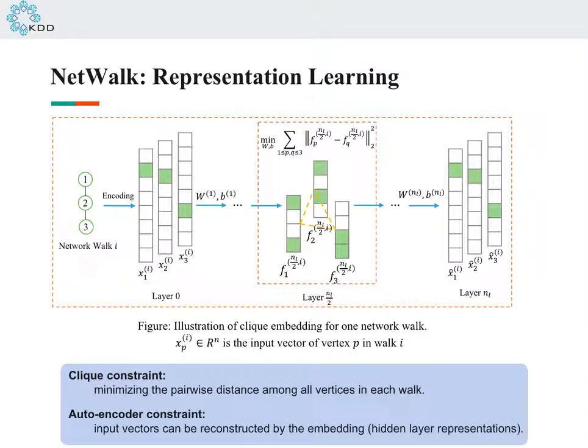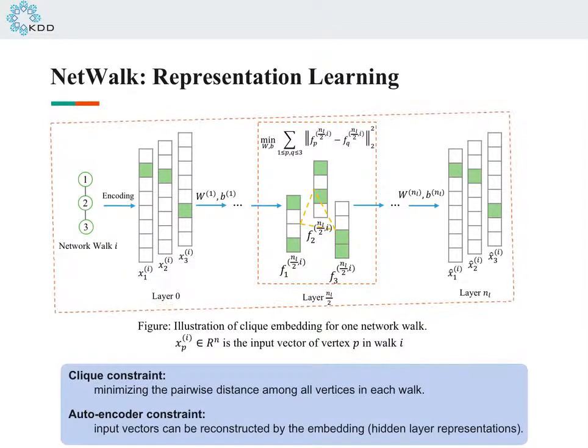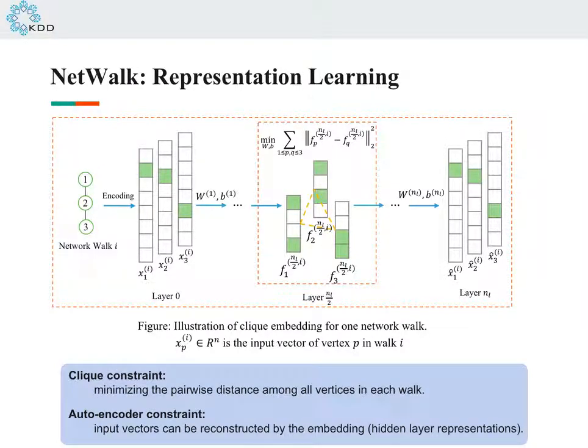And the second one is the autoencoder constraint, which serves as a global constraint. It minimizes the reconstruction error of the outputs.